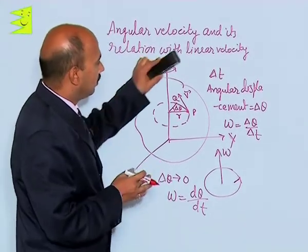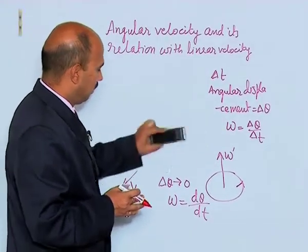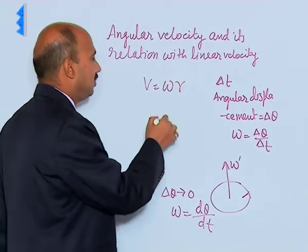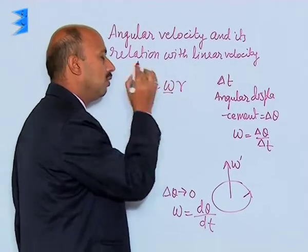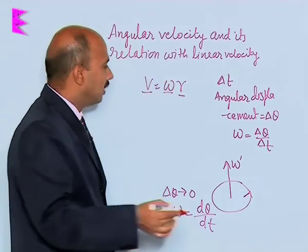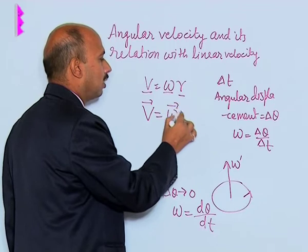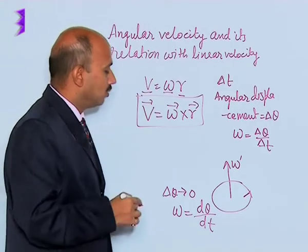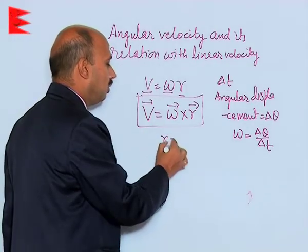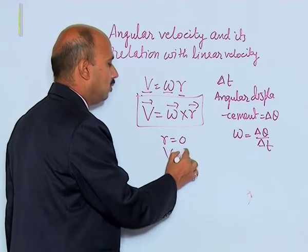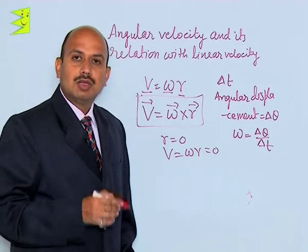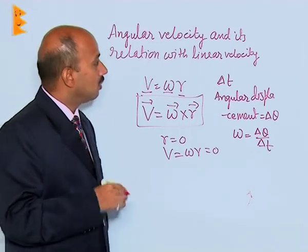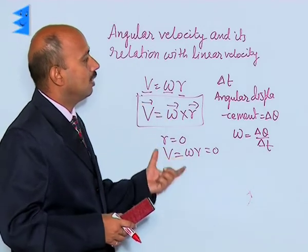We can write the relation with linear velocity: v equals omega times r, which was already derived in previous chapters, where v is the linear velocity of the particle, omega is the angular velocity, and r is the radius. In vector form, we can write v equals omega cross r. This is the relation between linear velocity and angular velocity. If r equals zero, then v equals omega times r equals zero, meaning the particle on the axis of rotation, where r is zero, has zero linear velocity.